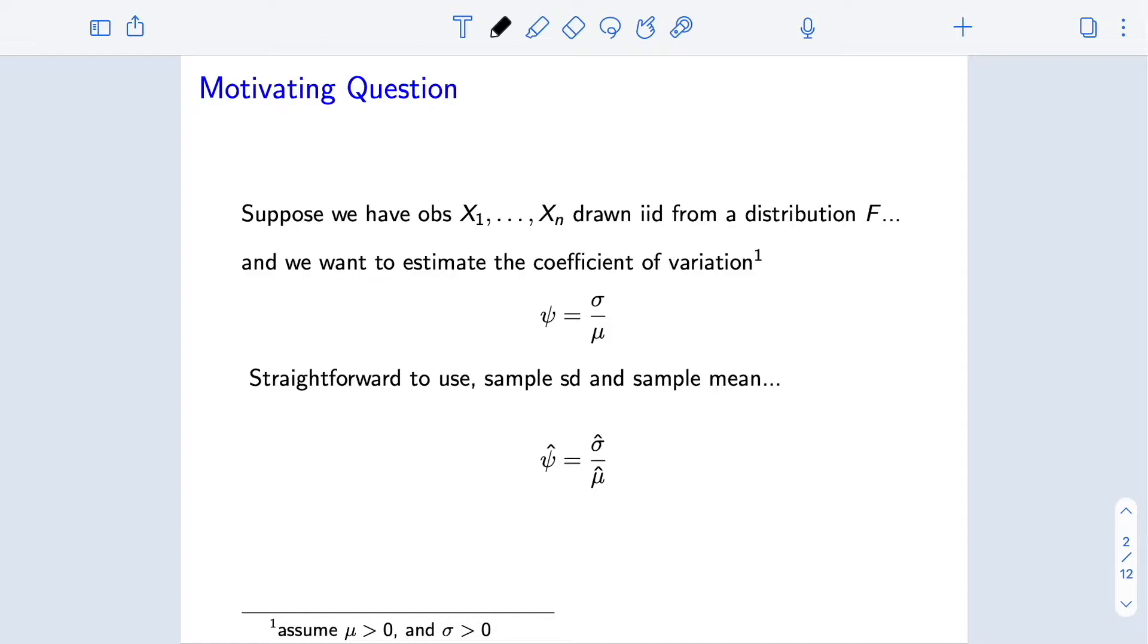To engage with this, let's return to the motivating question we've been considering for the last couple of slide sets. Let's imagine we have n observations drawn iid from a distribution f on the reals, and we're interested in estimating the coefficient of variation psi, which is this ratio of the population standard deviation divided by the population mean.